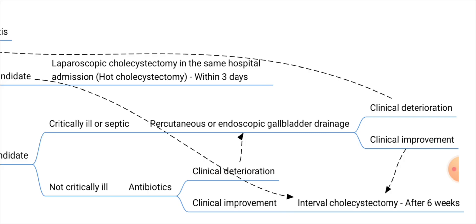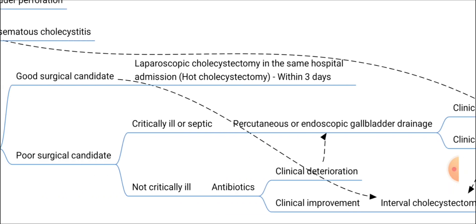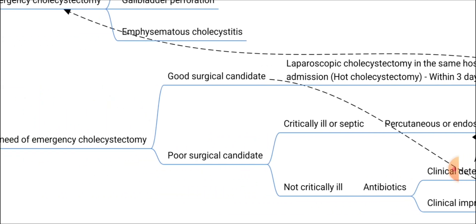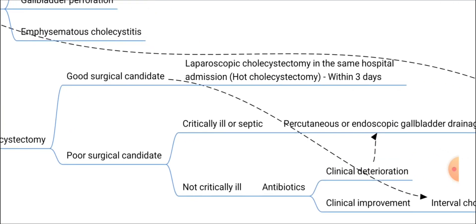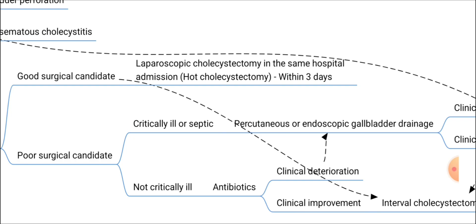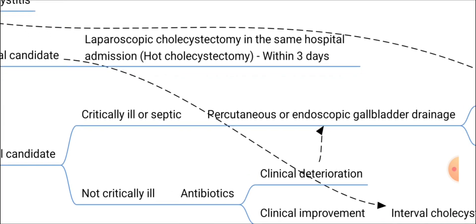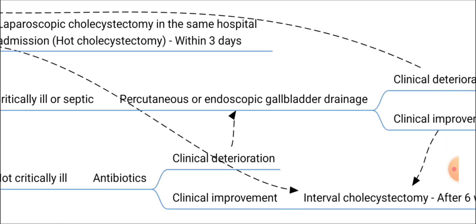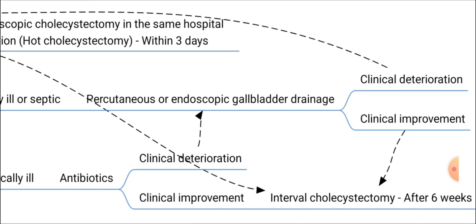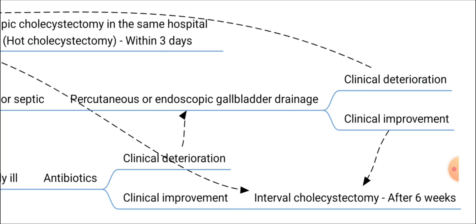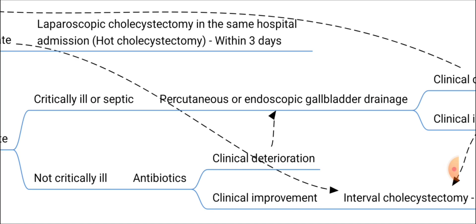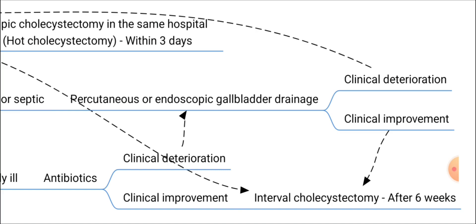Interval cholecystectomy means planning and performing cholecystectomy as an elective procedure after about six weeks. If the patient has no indication for emergency cholecystectomy, is not a good surgical candidate, and is not critically ill, we continue antibiotics and observe. If the patient deteriorates with conservative management, we perform percutaneous endoscopic gallbladder drainage and proceed with further management. If the patient improves with antibiotics, we plan interval cholecystectomy after six weeks.